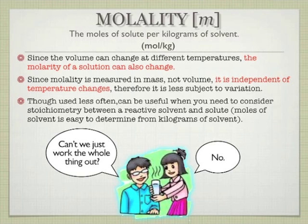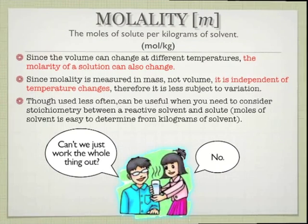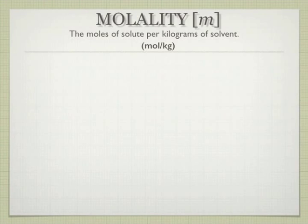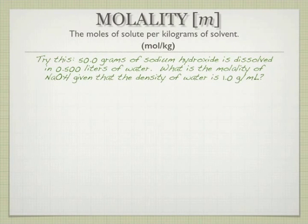There are some other advantages of molality too. First off, all you need is a good balance. You're going to measure the mass of the solute and convert that to moles, and then use the mass of the solvent. That also means you can convert the mass of the solvent to moles of solvent if you have to. The reason you might do that is if you have a reactive solvent. Most of our solvents are non-reactive, so we don't really care. But if you have a reactive solvent, you'll want to know how many moles of solvent you have. It's also useful for colligative properties when you're trying to figure out the number of particles of solute per solvent.